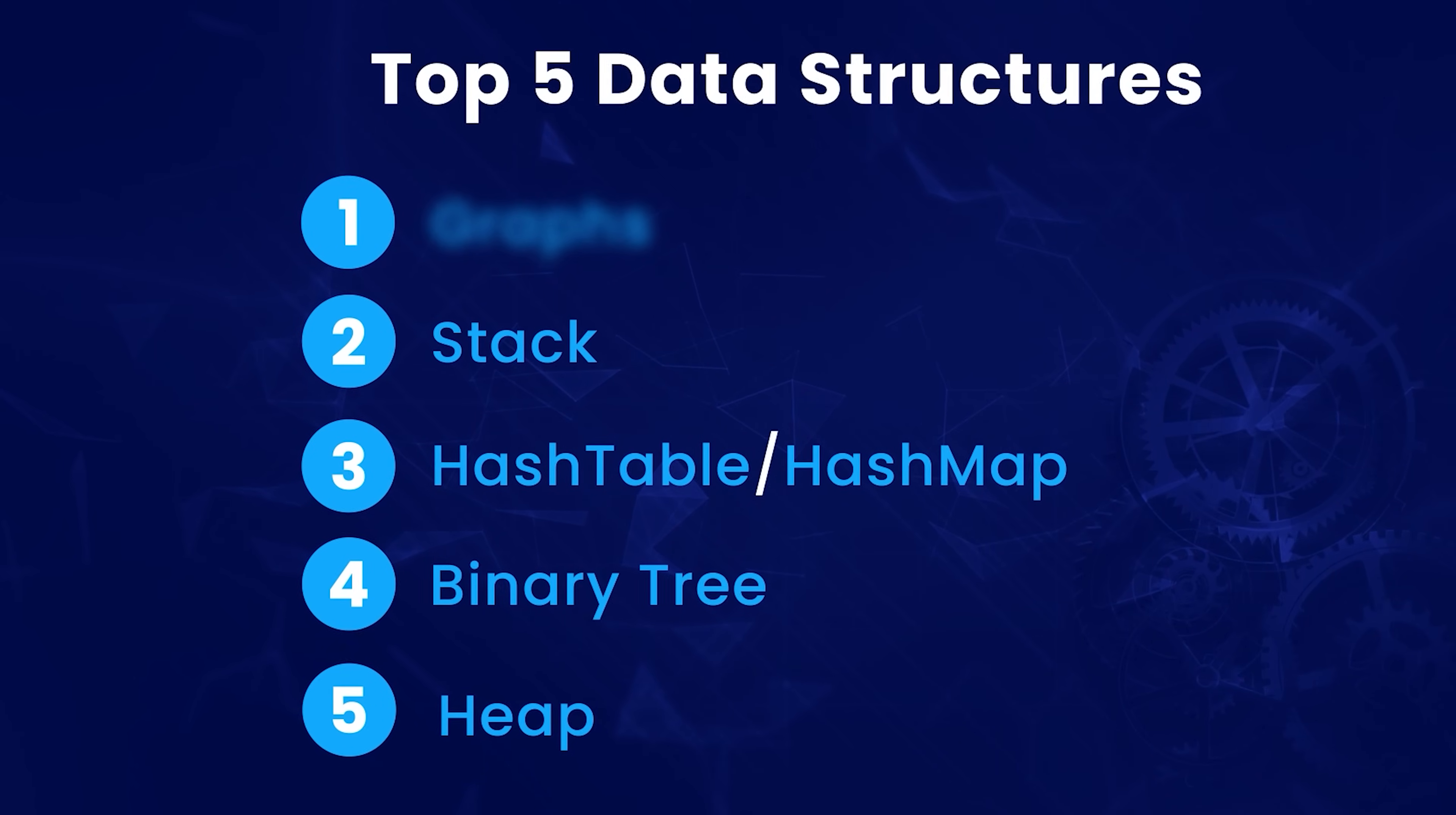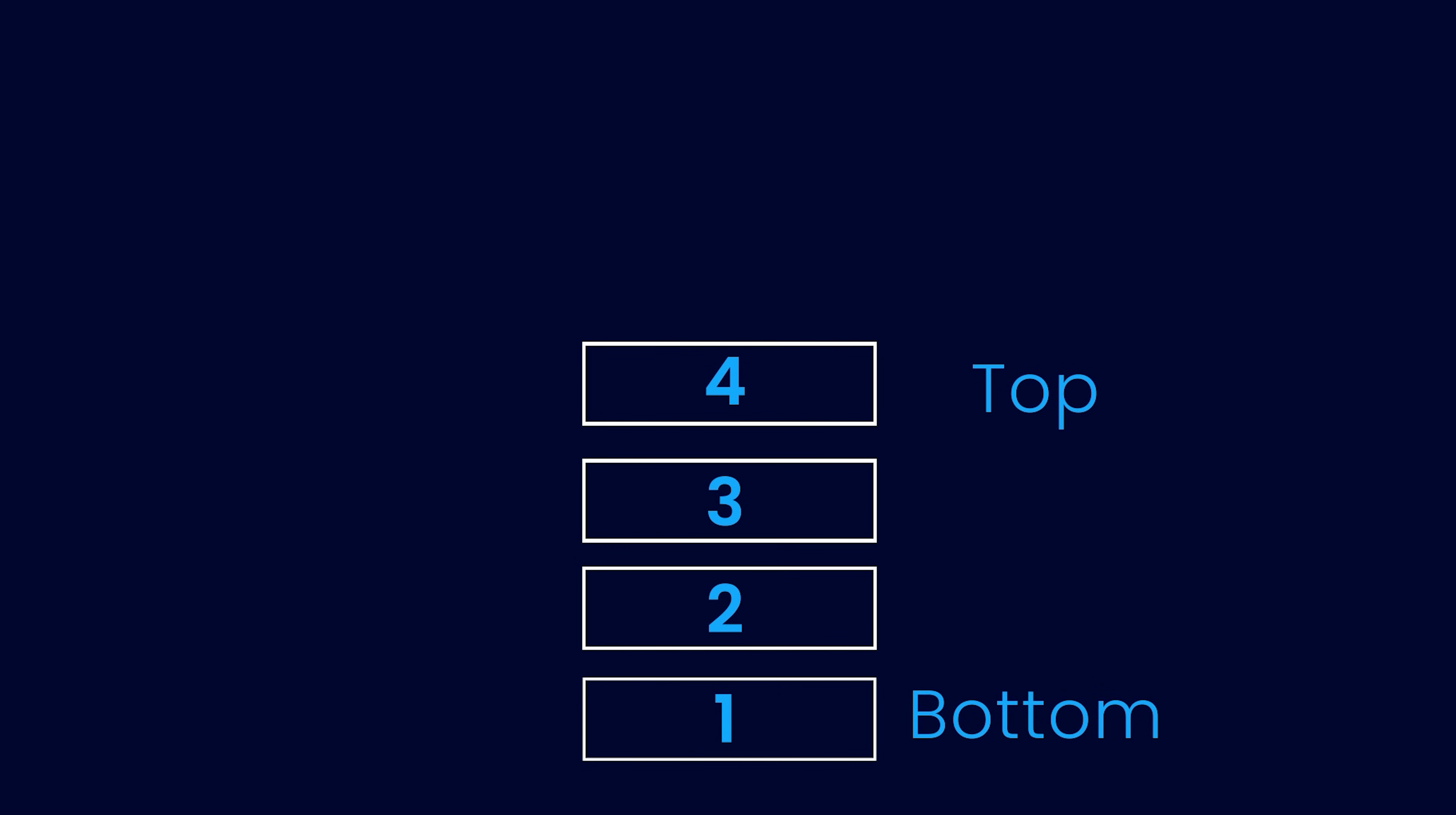At number 4, we have a stack. I'll also include queues here because they are very similar to stacks. Stack is a data structure that supports two main operations. Adding an element which is also called pushing and removing an element which is also called popping. In a stack, when you remove or pop an element, you always get the last element that you added to the stack. Last in, first out.